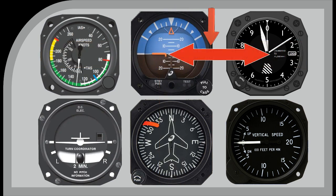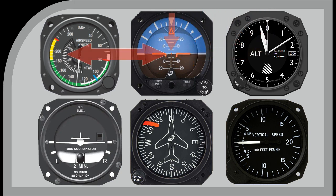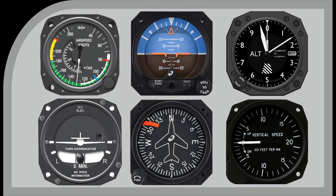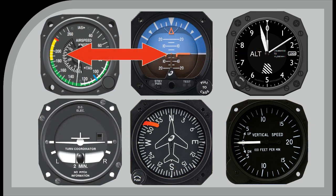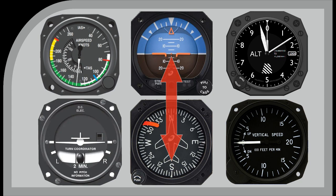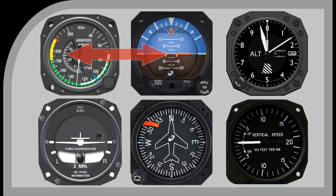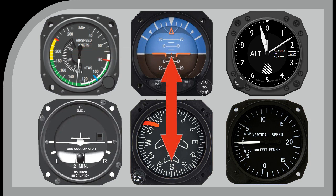Firstly, the pilot will look at the altimeter, but only for a short period, and then look back at the horizon. Then the pilot will scan across to the airspeed indicator, and then back to the horizon. The pilot will then start the sequence again — the idea being that the pilot can check if the aircraft has moved from its desired altitude, speed, and direction, and if necessary make corrections.